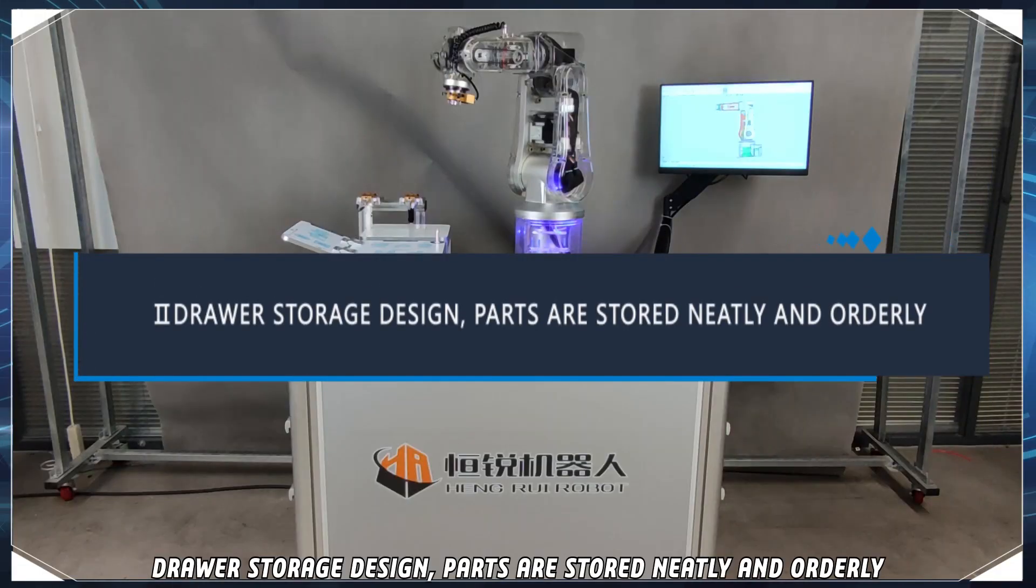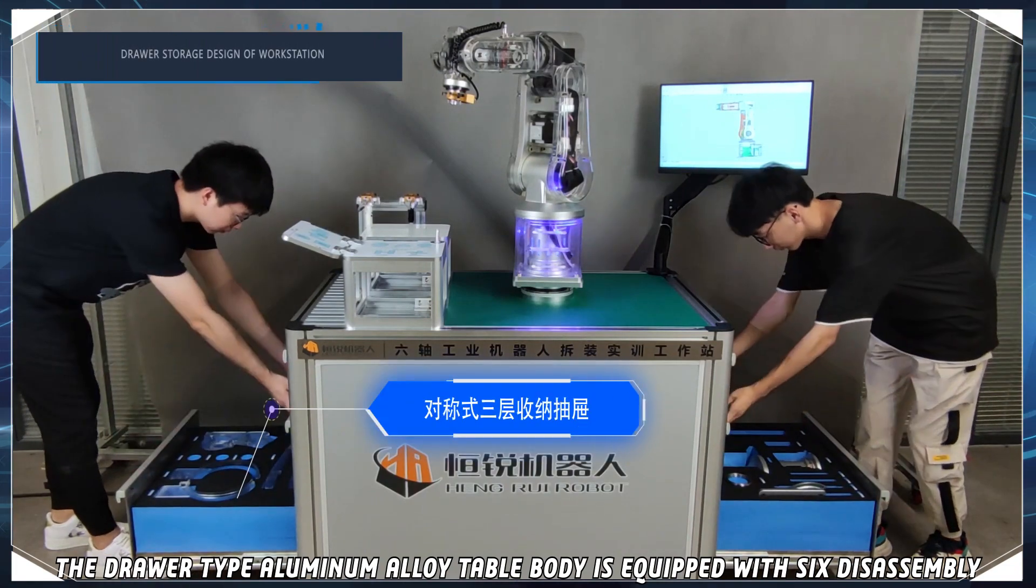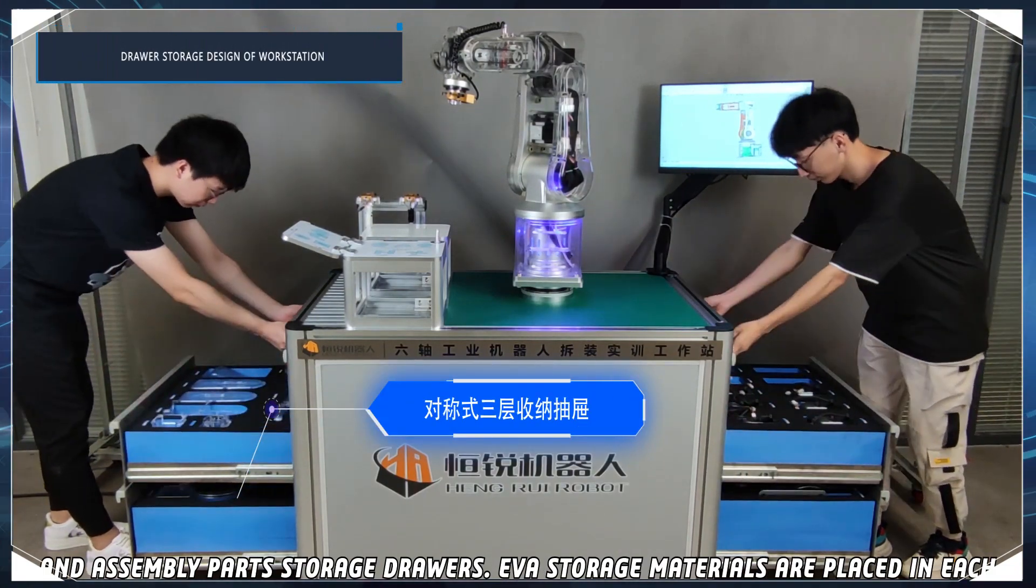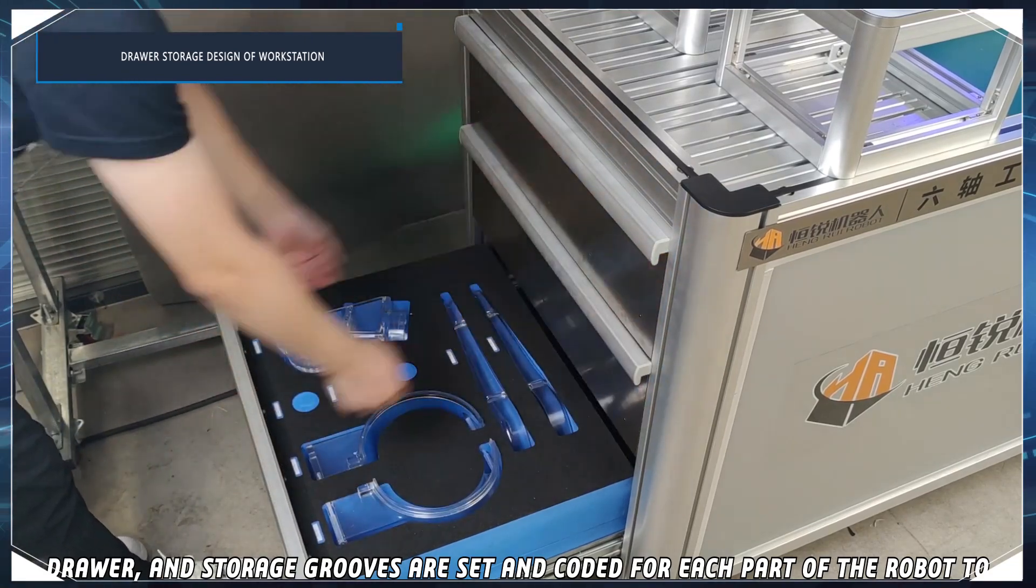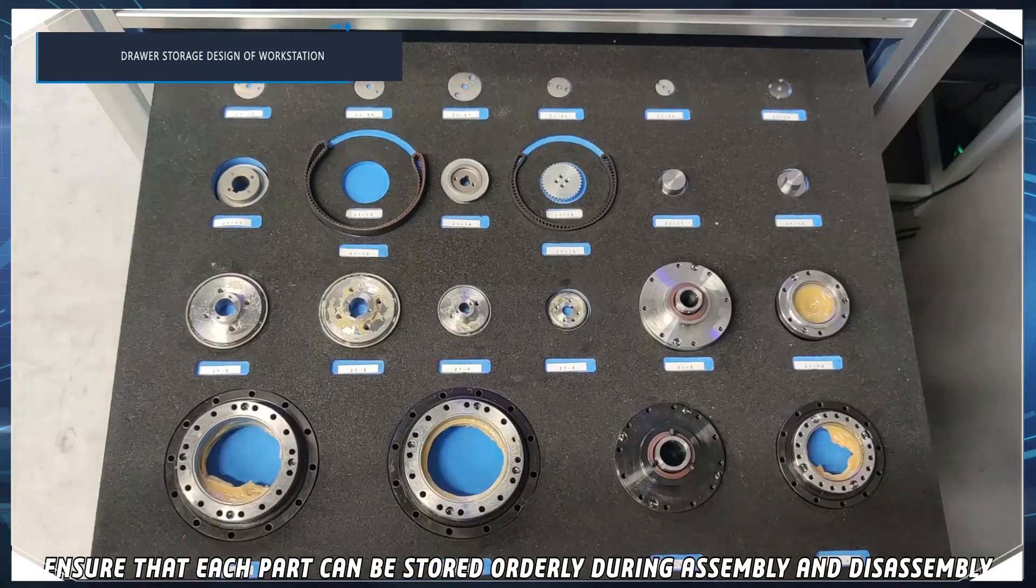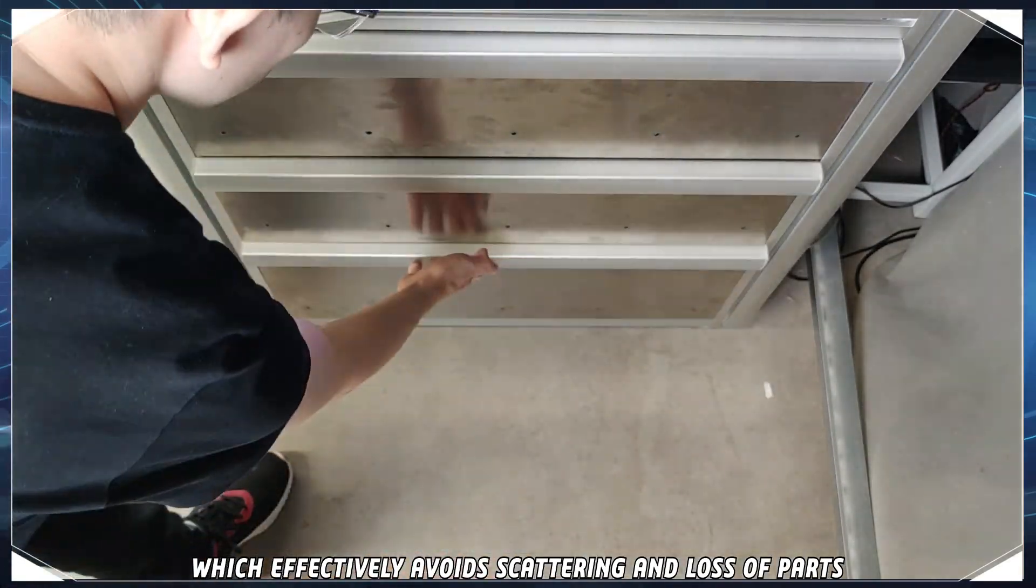Drawer storage design. Parts are stored neatly and orderly. The drawer type aluminum alloy table body is equipped with six assembly and disassembly parts storage drawers. All storage materials are placed in each drawer and storage grooves are set and coated for each part of the robot to ensure that each part can be stored orderly during assembly and disassembly, which effectively avoids scattering and loss of parts.